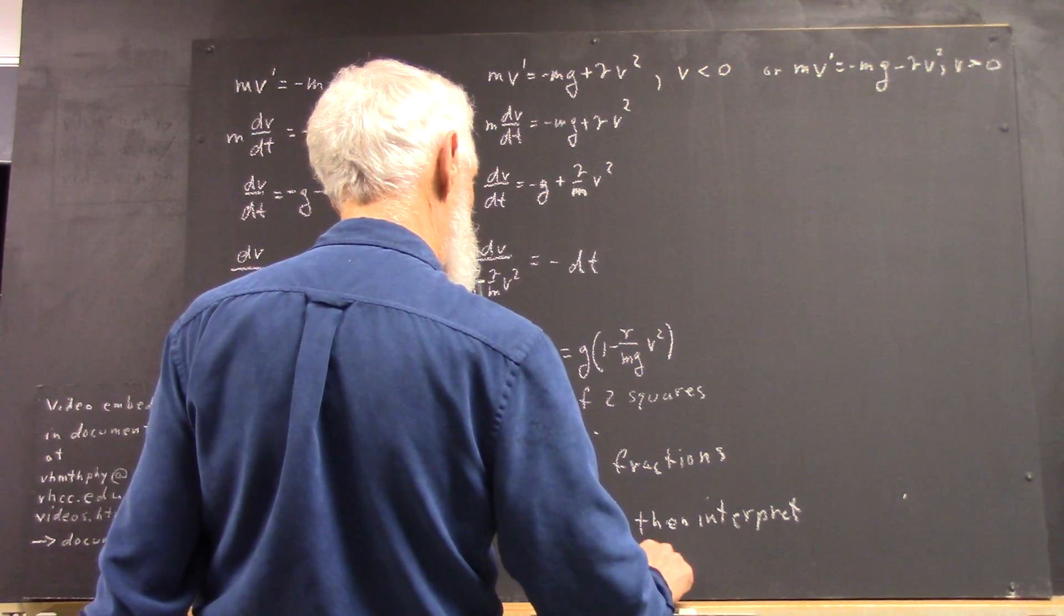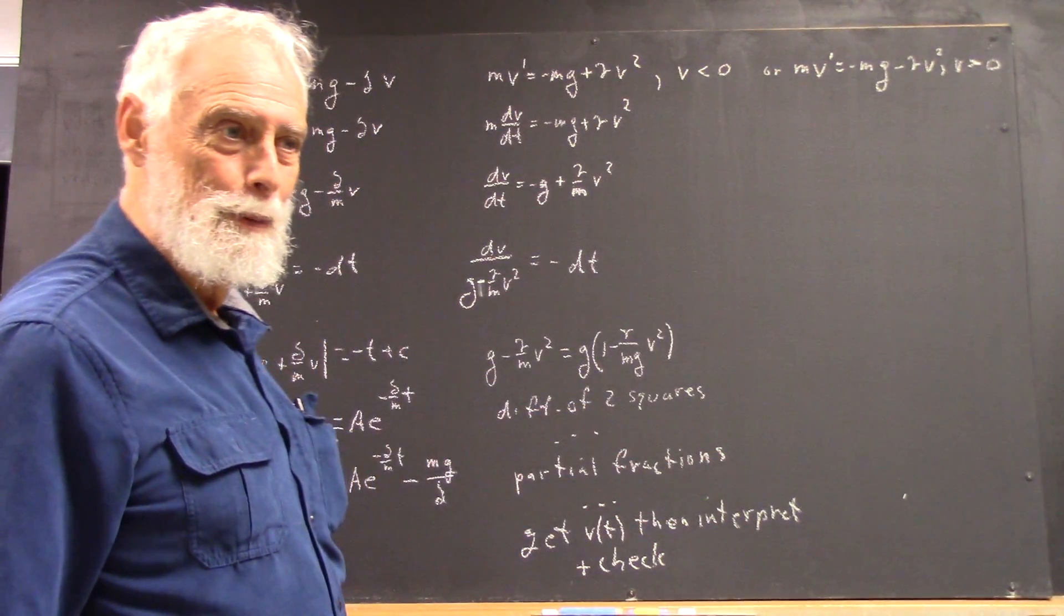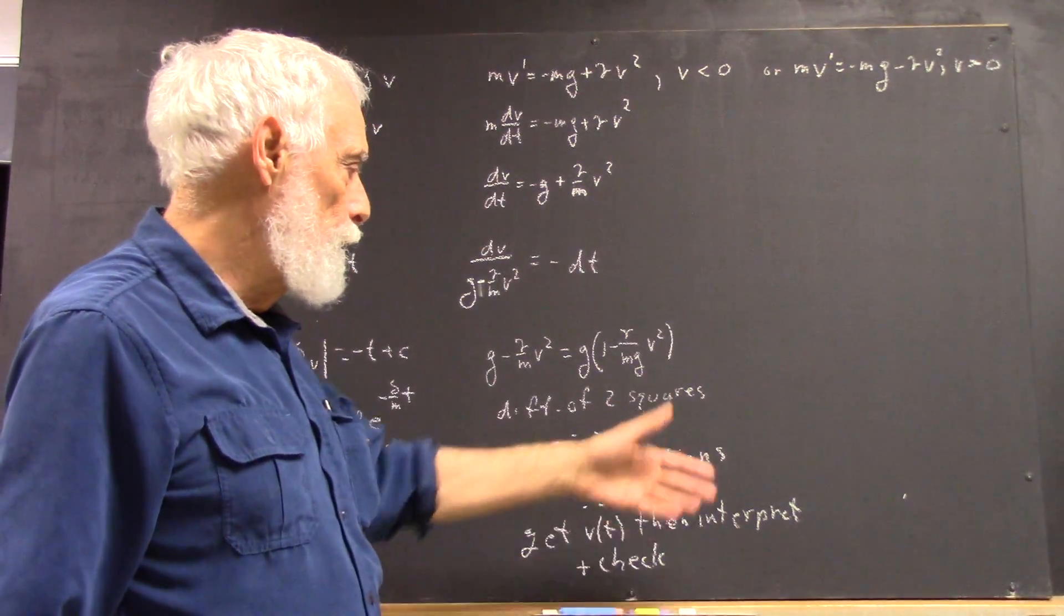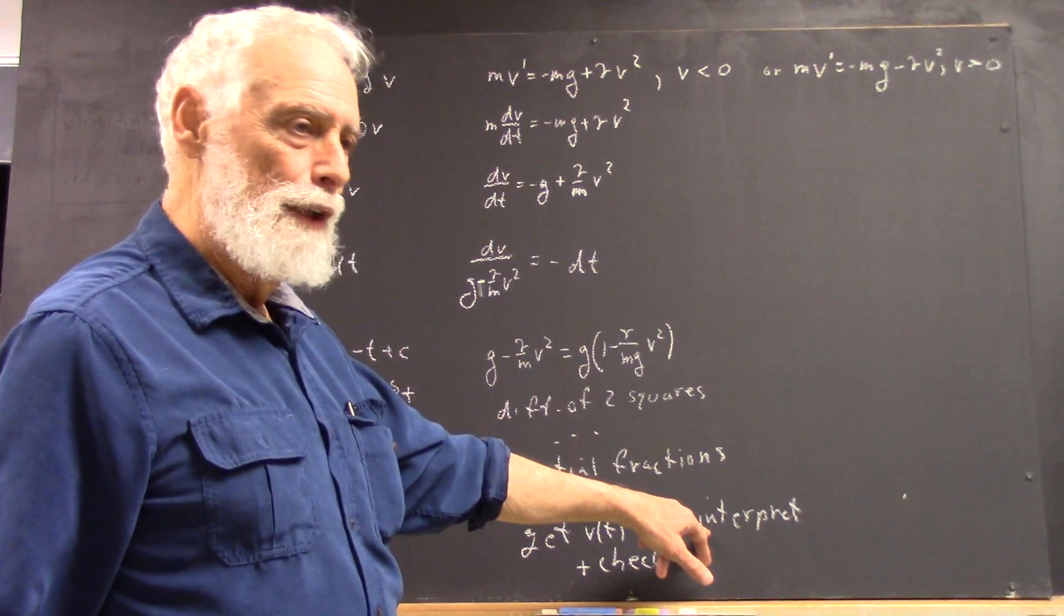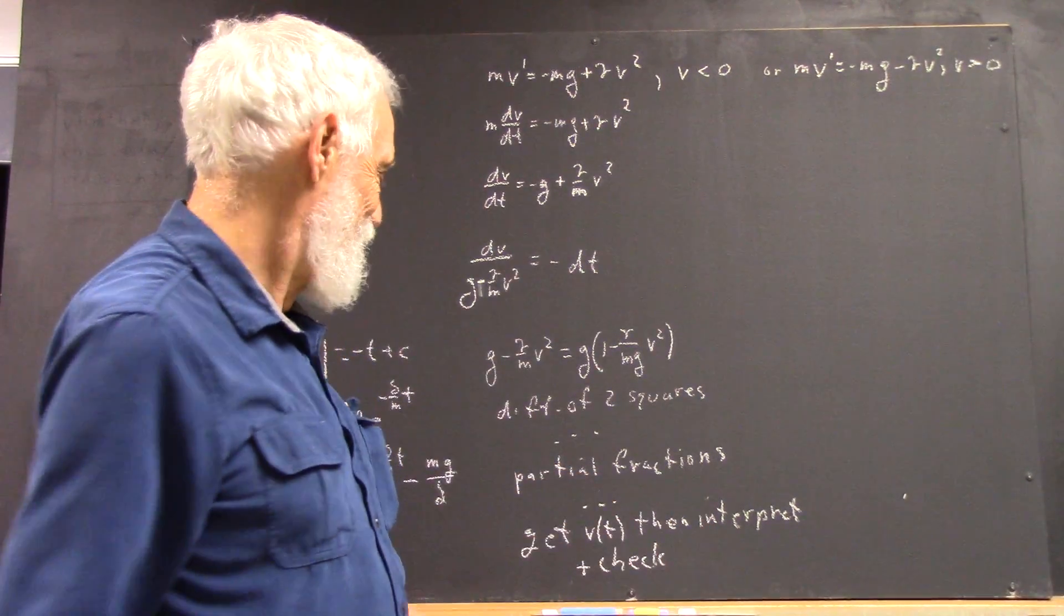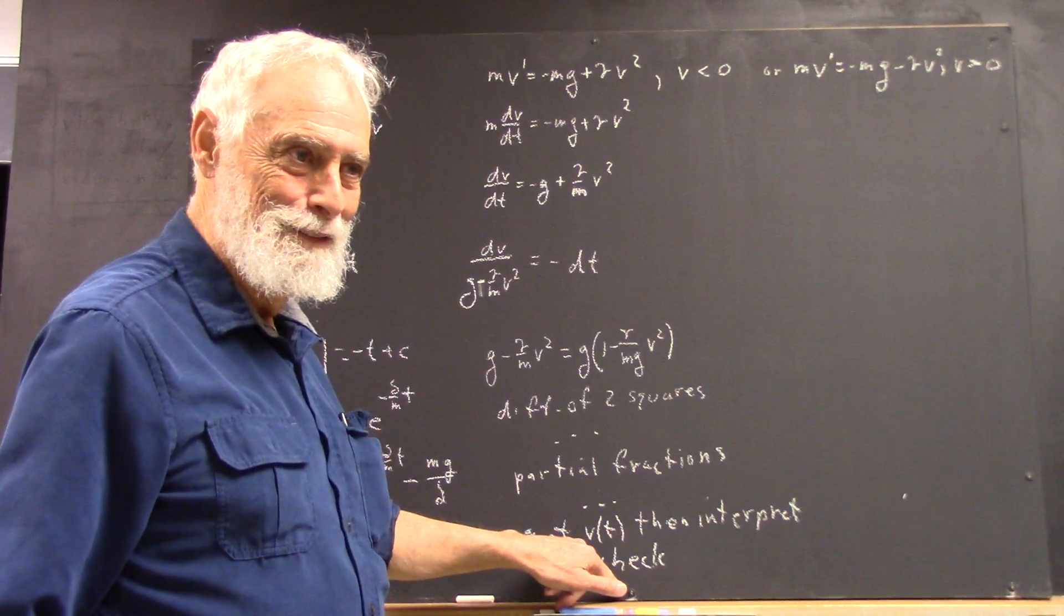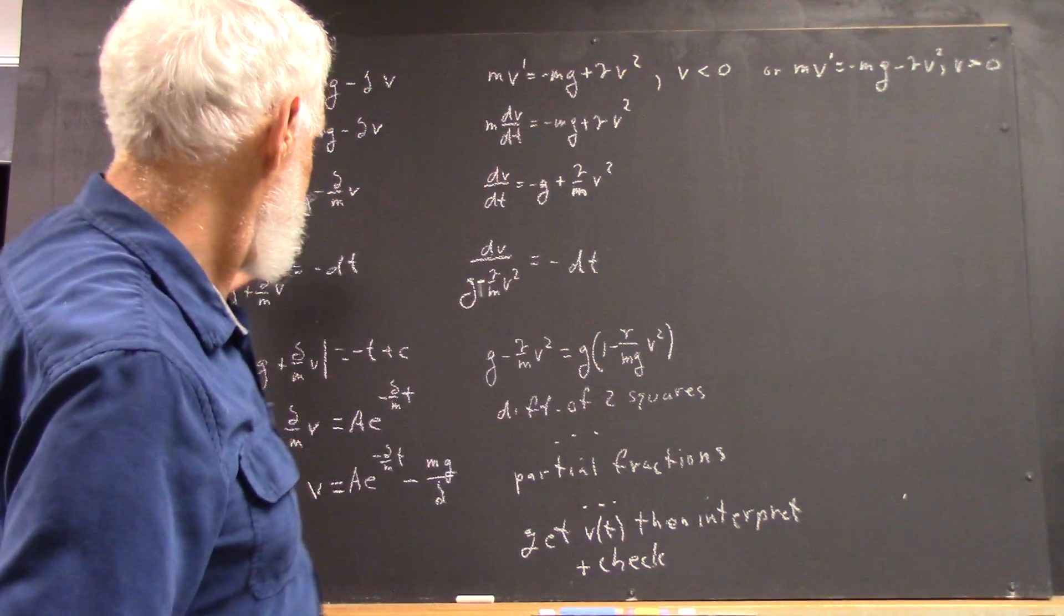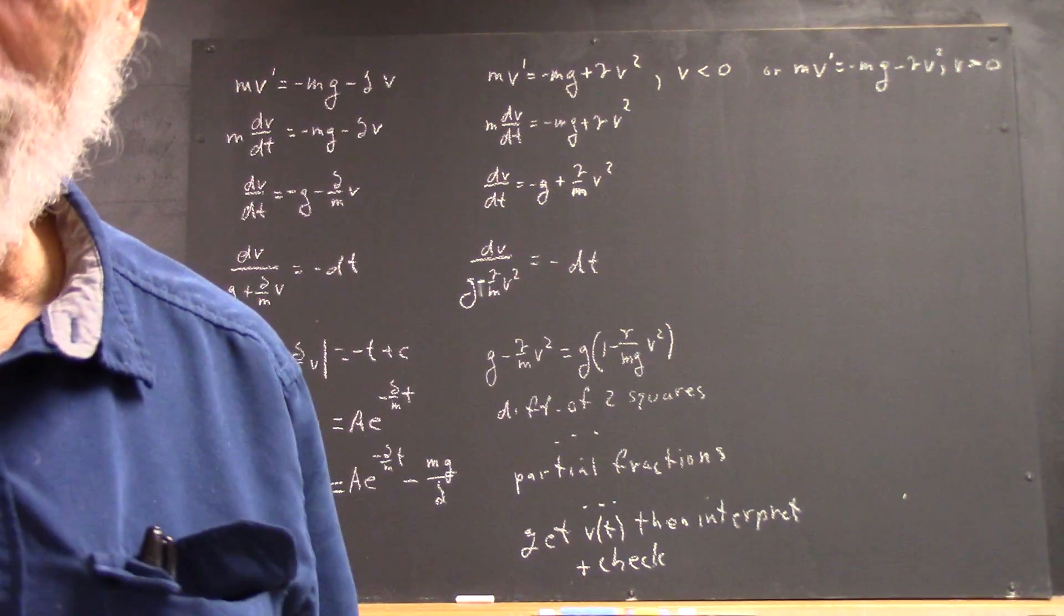Then interpret this and check. And actually check, probably, before you interpret it. But you kind of do both at the same time, because if your interpretation doesn't hold any water, then you probably screwed it up. And your check probably isn't going to work. Okay? So that's the scheme. Go ahead and work that one out, and we'll see how you do with it.